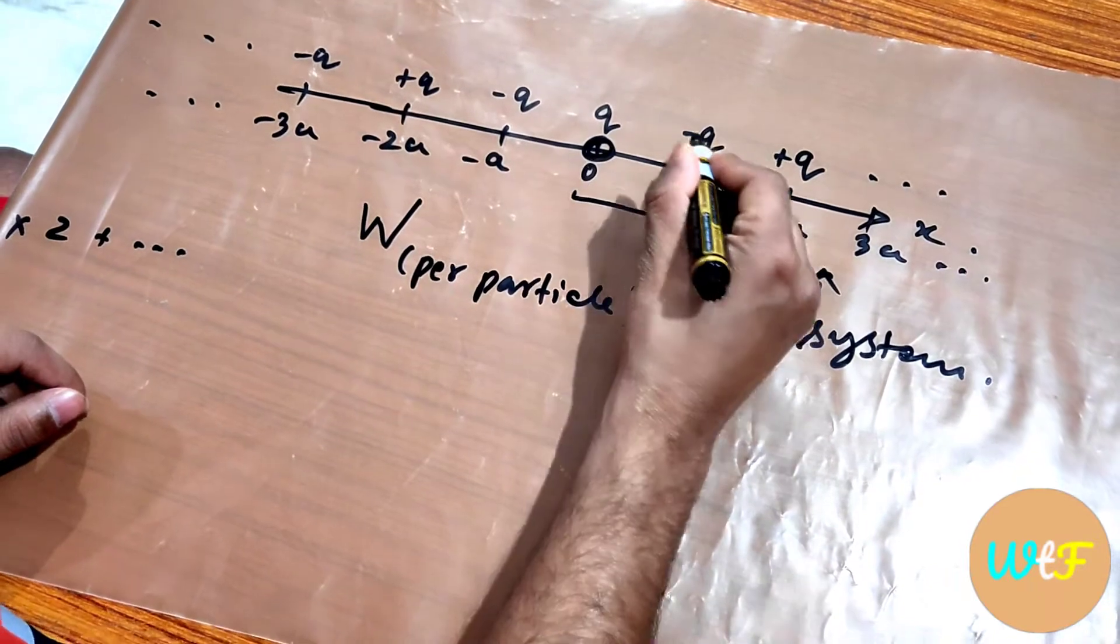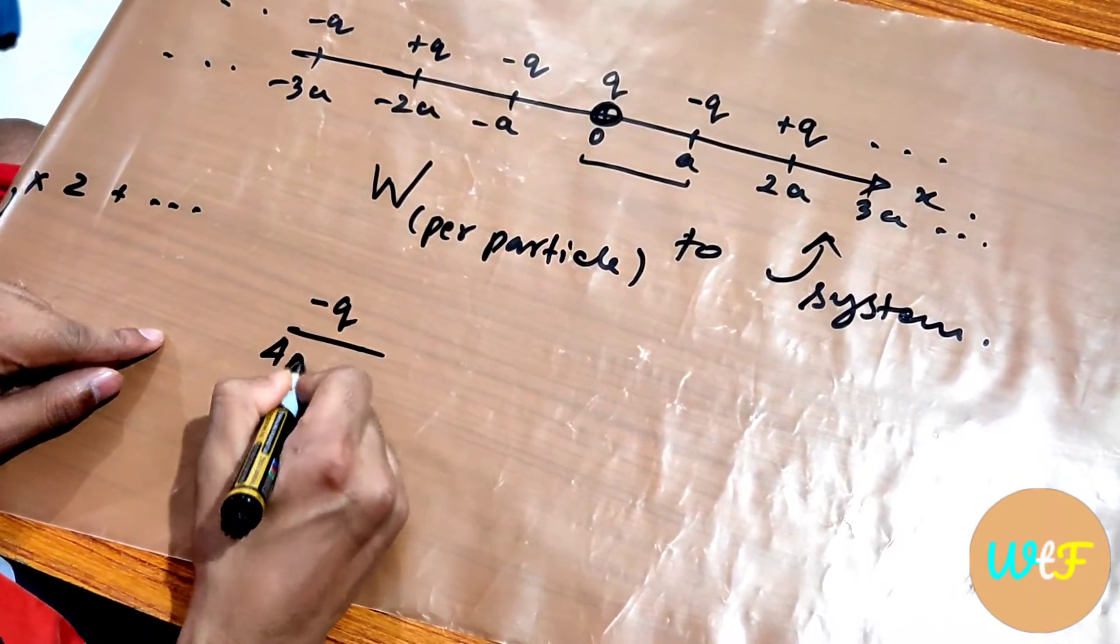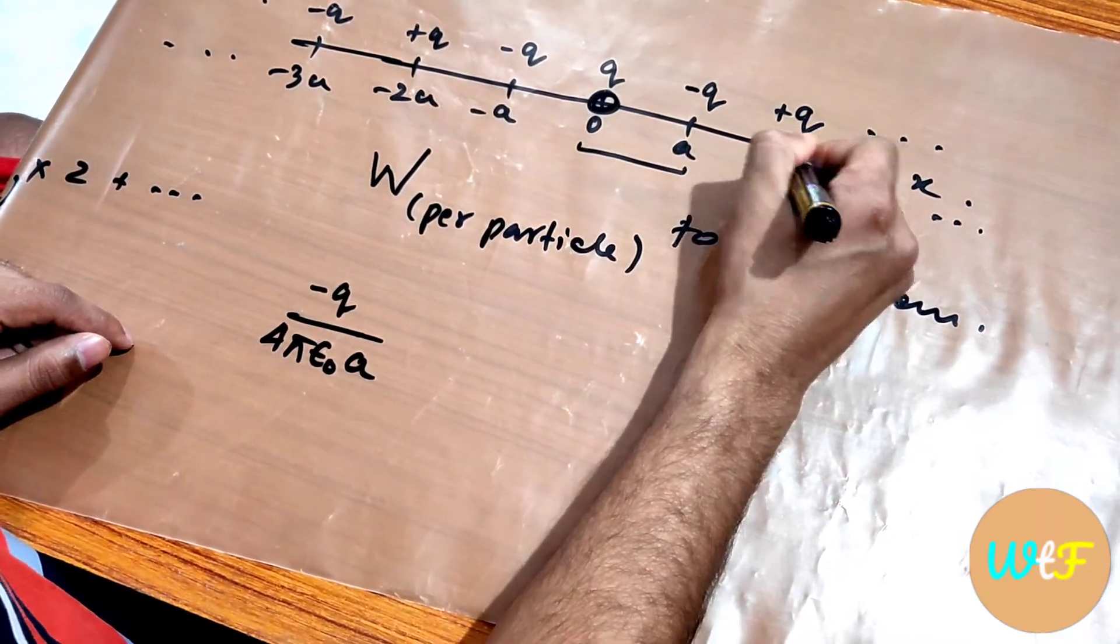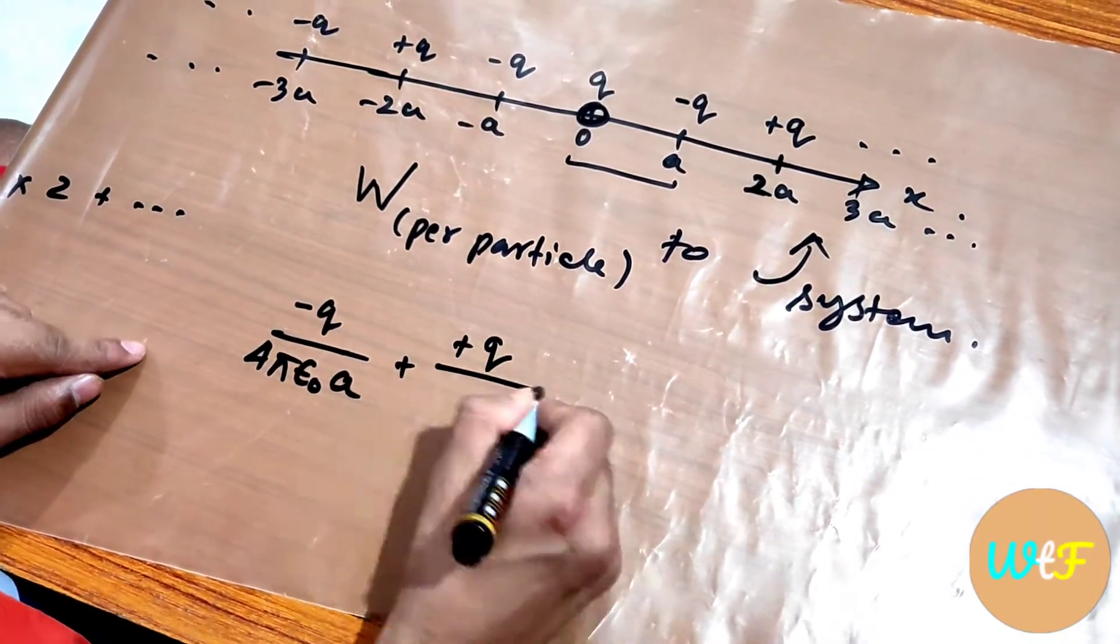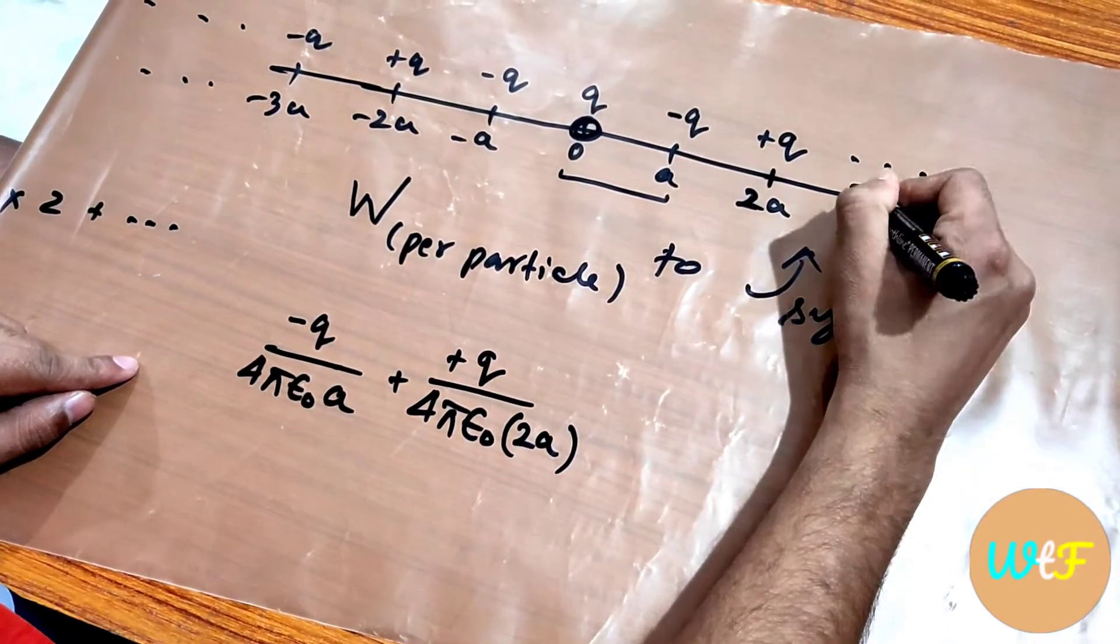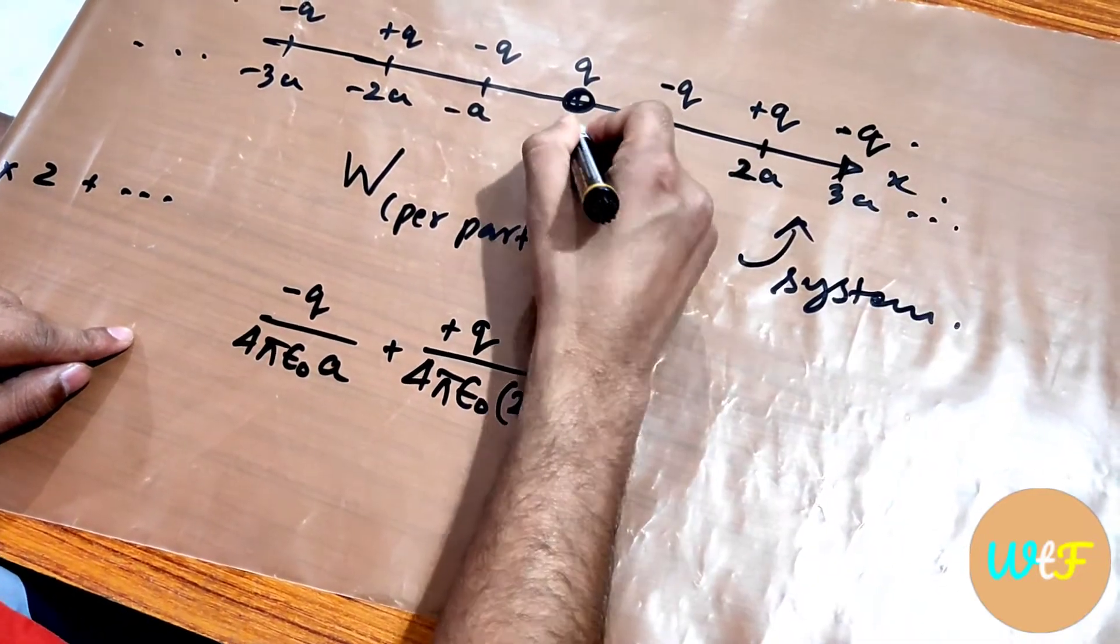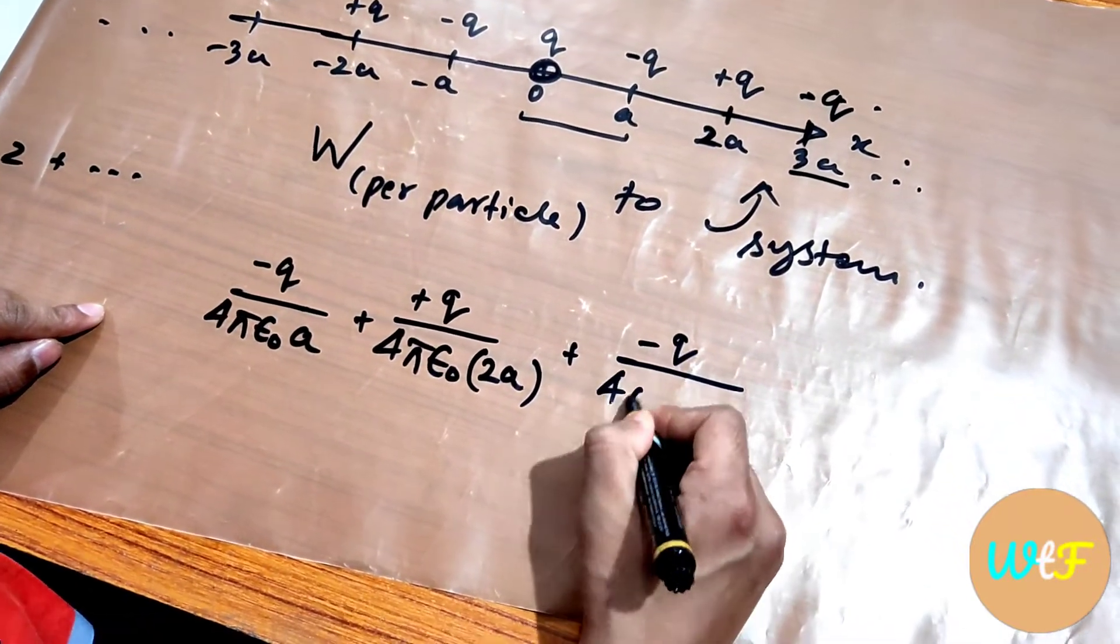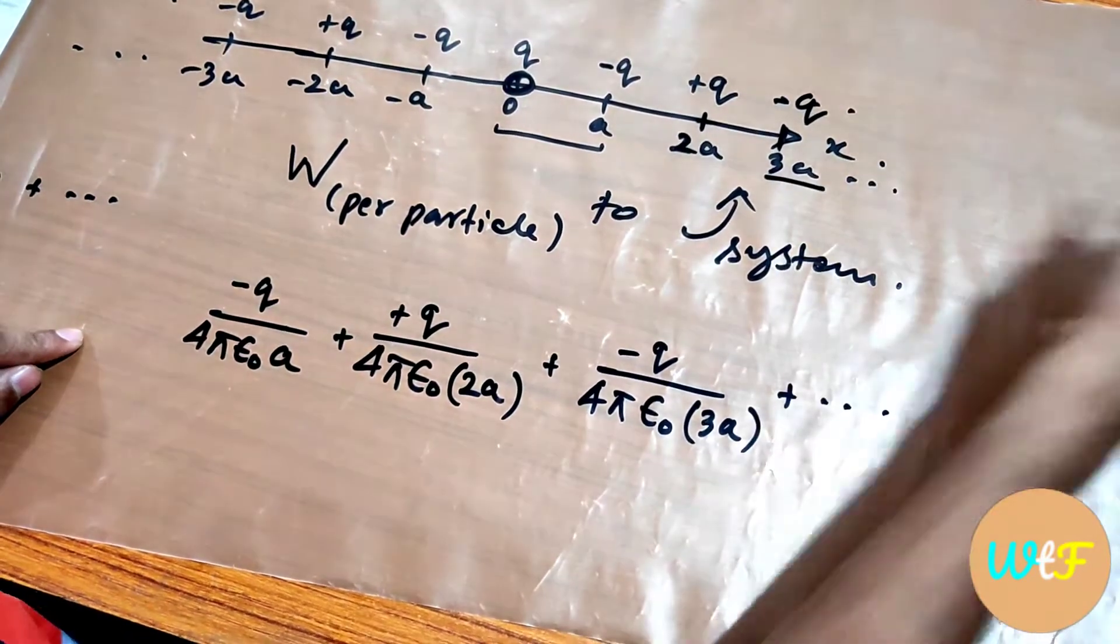Potential at origin due to minus q is minus q by 4π ε₀ a, right? Potential due to plus q at 2a is equal to plus q by 4π ε₀ of 2a. At 3a we have a minus q, so potential at origin due to the charge placed here will be minus q by 4π ε₀ 3a, and so on for this side.